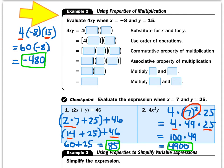Let's look at Example 2, using the properties of multiplication. If you're going to use the properties, just think of the easiest way to put those numbers together. They want us to evaluate 4xy when x is negative 8 and y is 15. So that's 4 times negative 8 times 15. Rather than multiplying 4 times negative 8 first, it's smarter to do 4 times 15 first because that's easy — it gives us 60. Then 60 times negative 8 gives us negative 480.